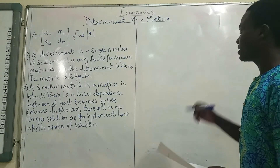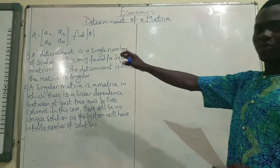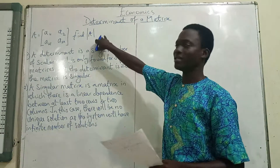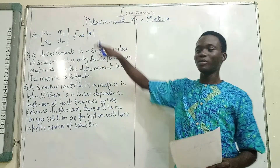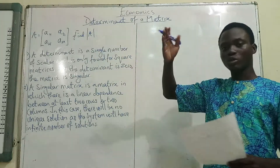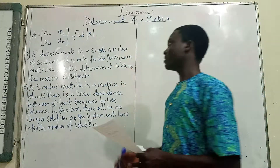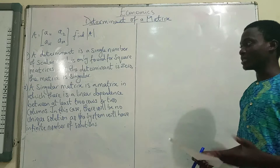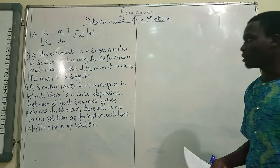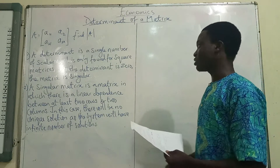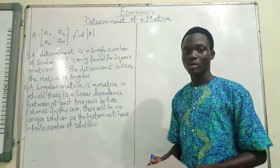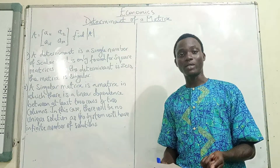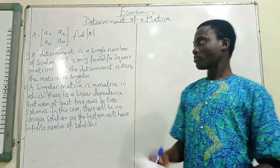So how do we find the determinant of the matrix? We have matrix A equal to something, and we have to find something written with two vertical strokes beside it — that is the determinant of matrix A. Now what's a determinant? A determinant is a single scalar number, and it's only found for square matrices — matrices that have the same number of columns and rows.